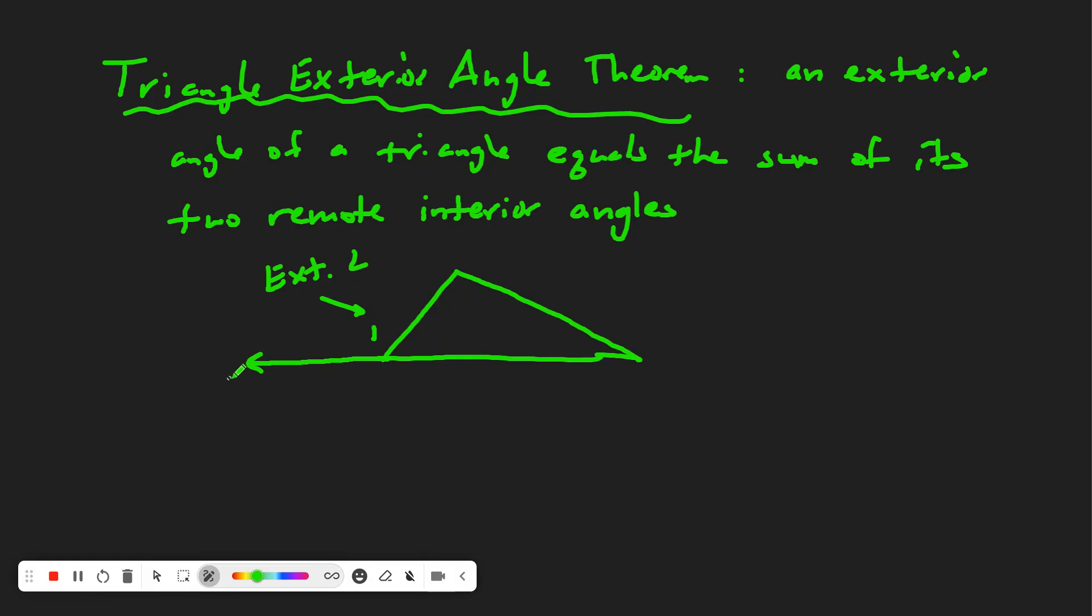When we talk about the remote interior angles, these are the angles that Angle 1 does not share a vertex with. Angle 1 shares a vertex with that angle right there, so it's not that angle. I'm going to label these other two angles Angle 2 and Angle 3. These two angles are the remote interior angles.